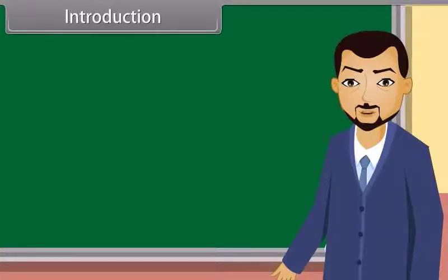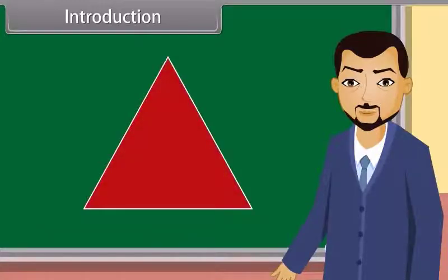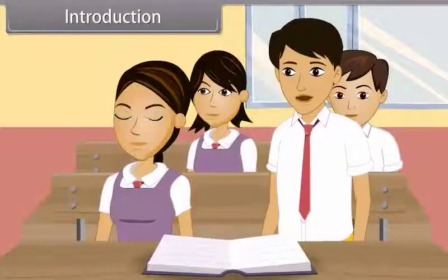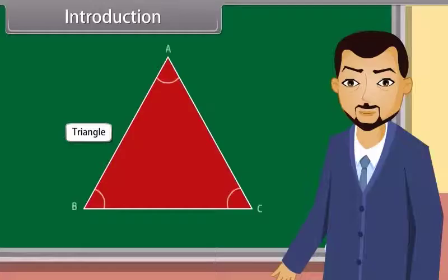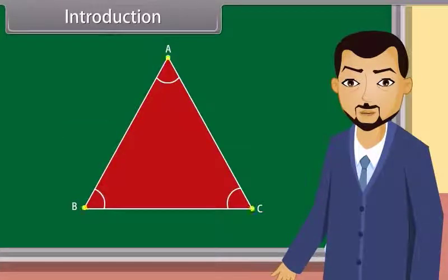Students, you must have studied about closed figures. Now, what do we call the figure which is formed by three intersecting lines? A triangle. Yes, you are right, Rahul. A triangle. It has three sides, three angles and three vertices. Today, I will tell you about the congruence of triangles and the properties of triangles.